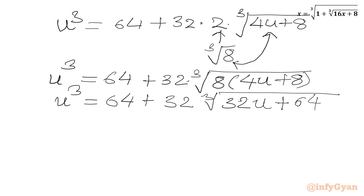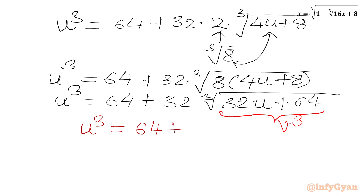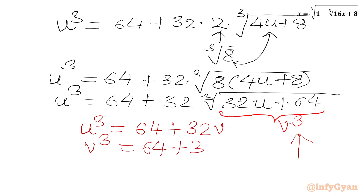Now it's substitution time. We will consider the radicand equal to v cubed, as we have a cube root, so that cube root and cube will cancel. So we write our first equation: u cubed equal to 64 plus 32v. And from the substitution equation we can write v cubed equal to 32u plus 64. Let's say this is equation 1 and this is equation 2.